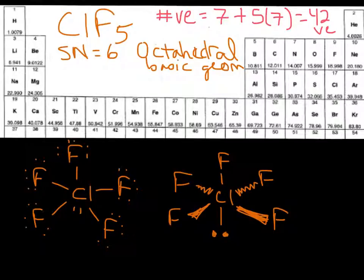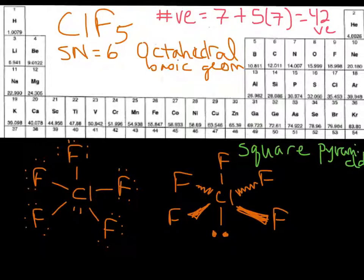And so basically, we have a square shaped pyramid, right? So we would call this square pyramidal. It's a square pyramidal geometry, and the last thing we want to do is take a look at these bond angles.